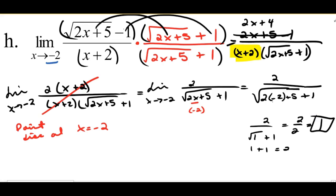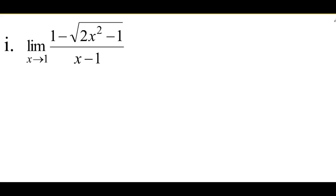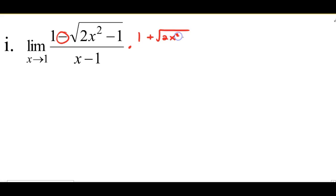This brings us to I. If I plug 1 in for X in the denominator, I'd get 1 minus 1 is 0, so direct substitution won't work. I have a radical, so I need to rationalize. I'm going to multiply by the conjugate — everything identical except the outside sign is changed to positive: 1 plus radical 2X squared minus 1. Same thing in the denominator and numerator, multiplying by something divided by itself equals 1, so I change the form but not the value.